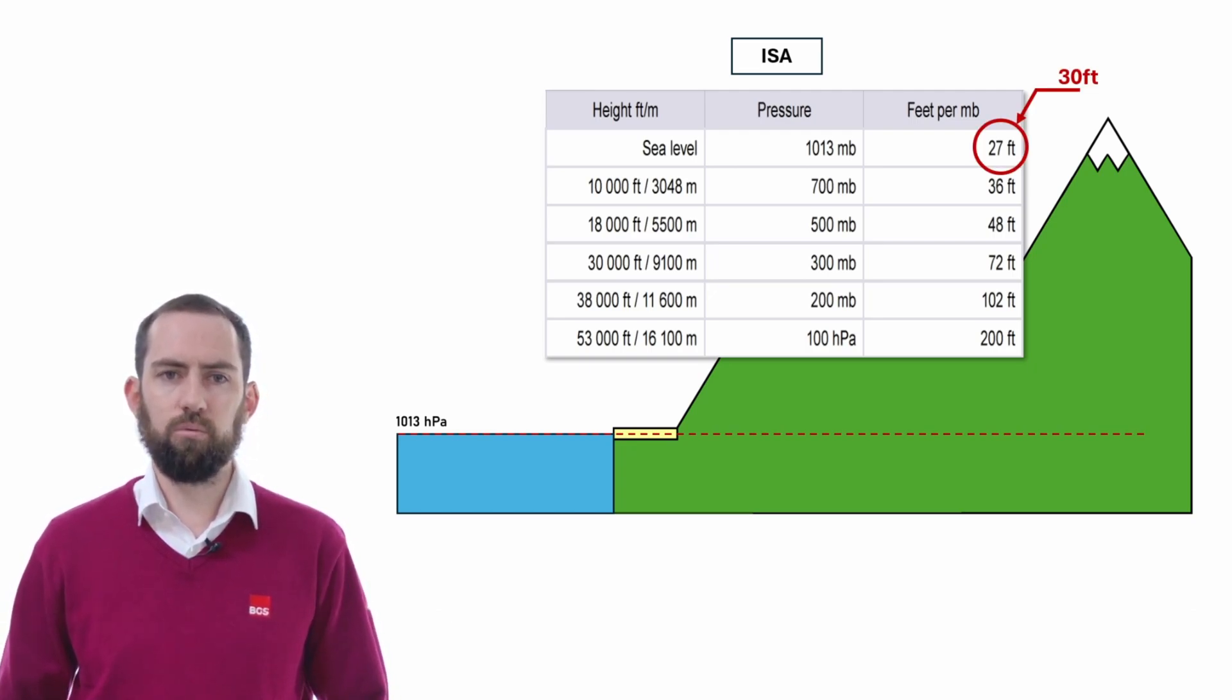These days, we use a figure of 30 for simplicity's sake, and that's what I will be using for the rest of the exercise. This means that if my pressure starts at sea level, at 1013 hectopascals, if I went 30 feet higher, the pressure should fall off by 1 hectopascal.